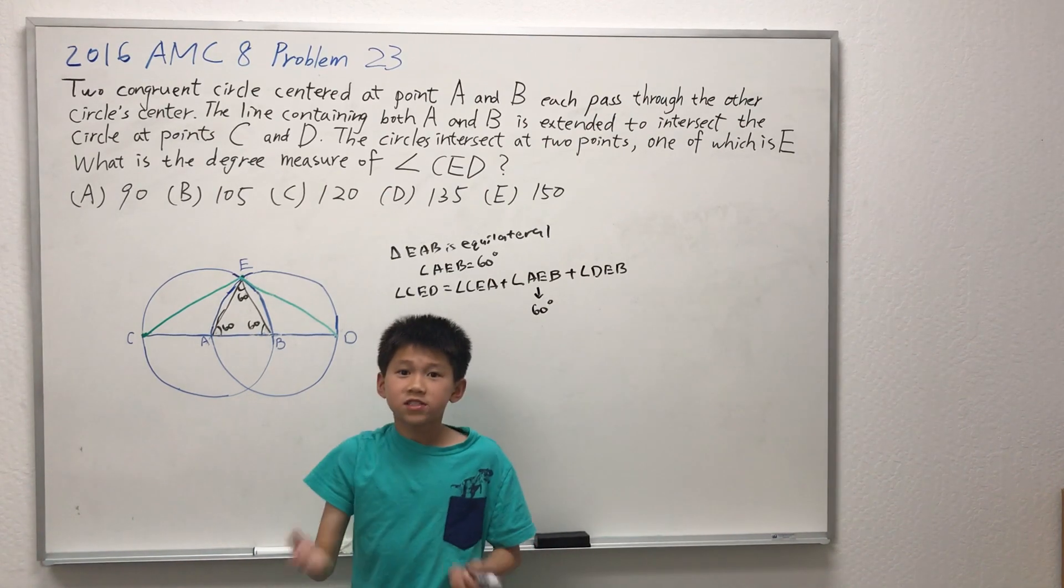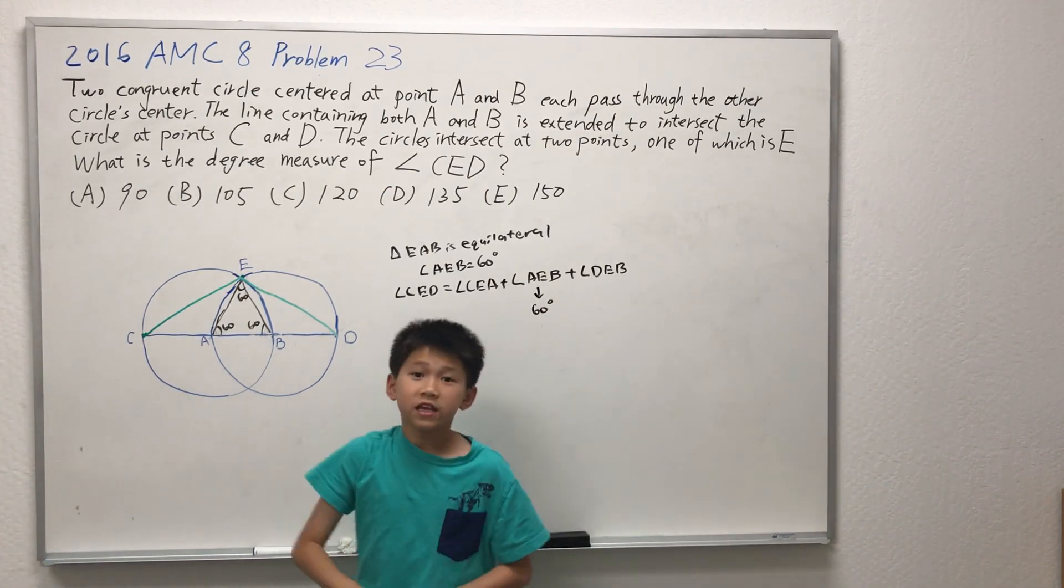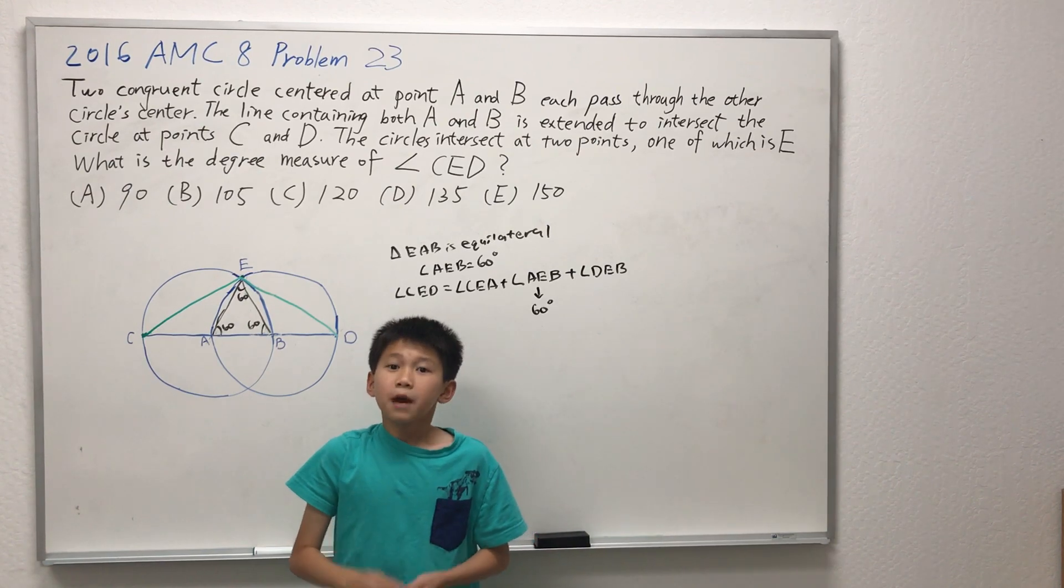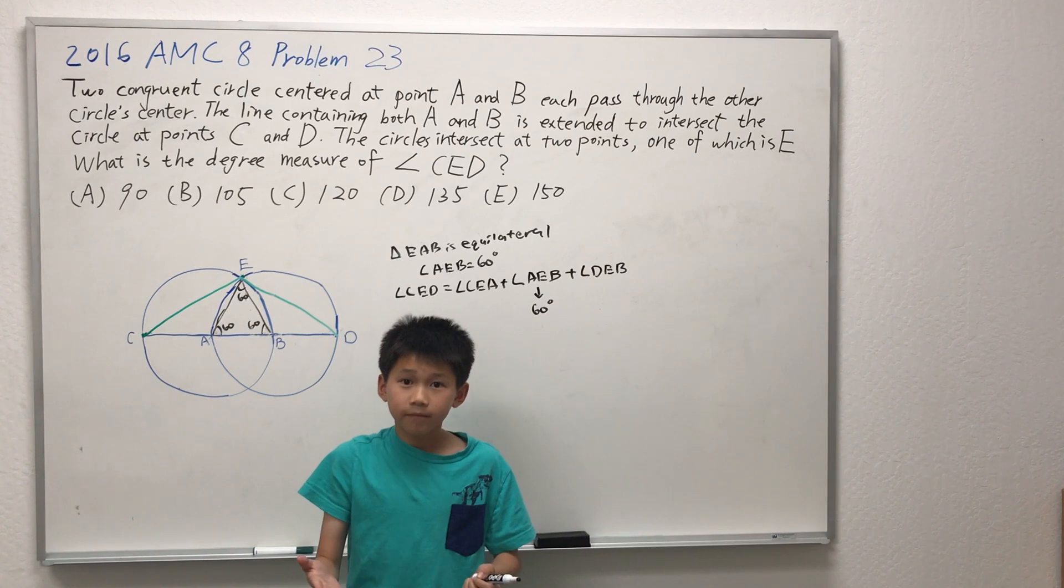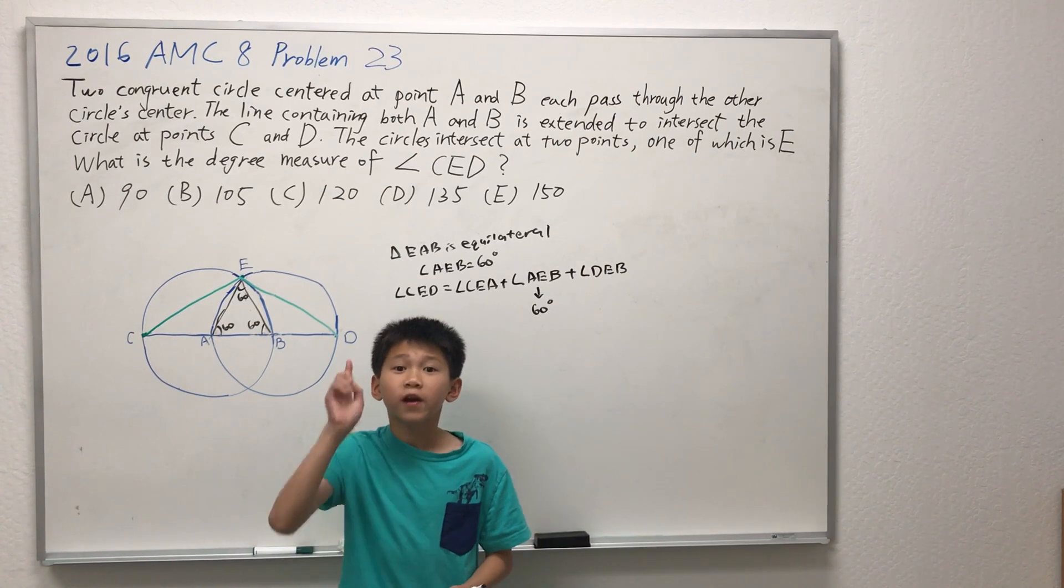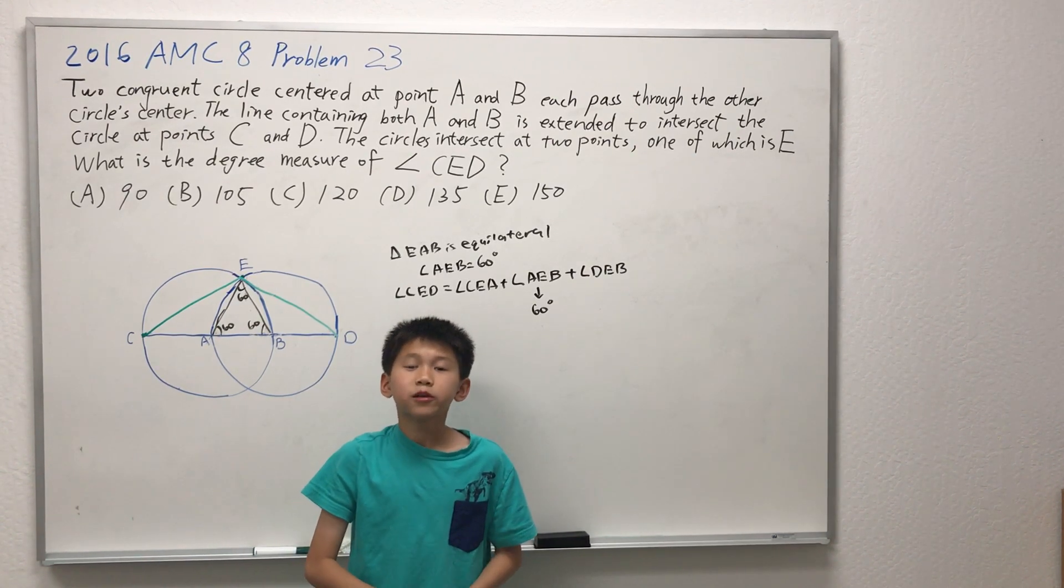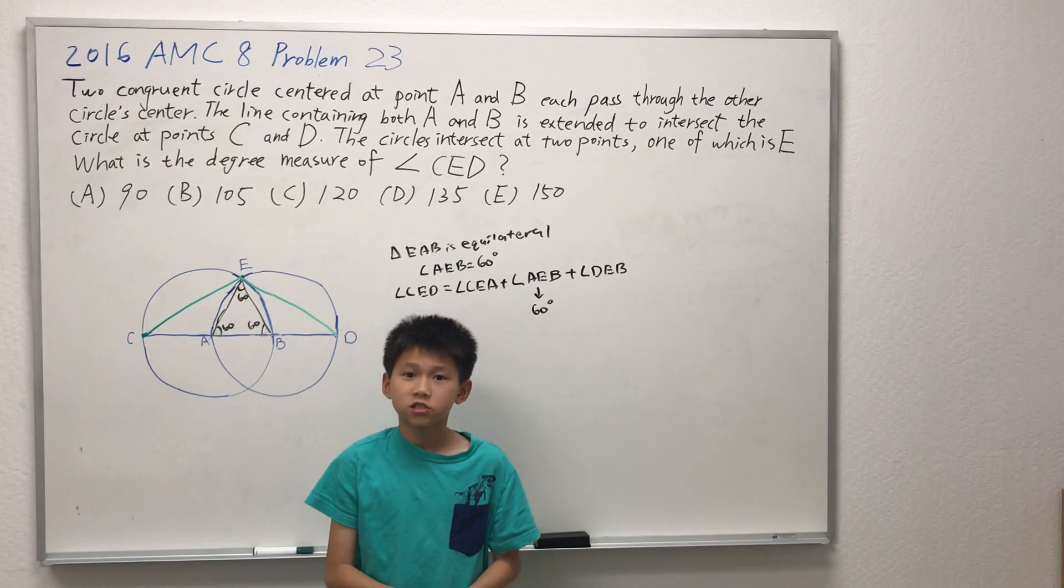All we have left to find is angle CEA and angle DEB. By symmetry, those two angles are the same. So all we need to do is find one of those angles, and just multiply by 2 and add 60 to it, and we've got the answer.